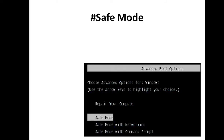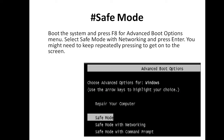The first step is to boot into safe mode. Boot the system and press F8 for the advanced boot options menu. Select safe mode with networking and press Enter. You might need to keep rapidly pressing F8 to get to that screen. Working in safe mode helps handle infected files as they are not actually running or active. Also, if the internet is the source of infection, you should remove the connection.